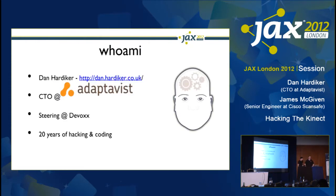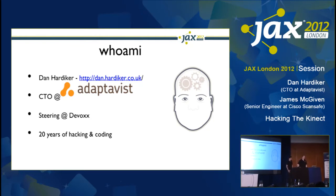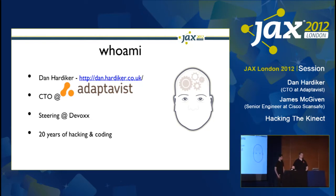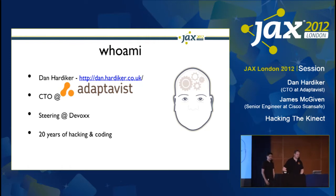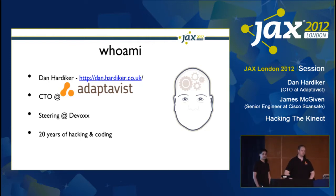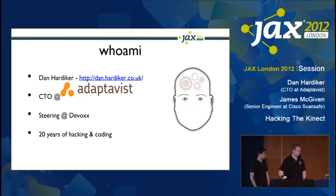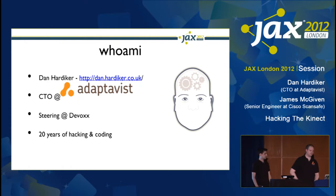Dan's going to introduce himself. I'm Dan Hardiker, CTO of Adaptivist. We deliver social software to large and small companies, focusing exclusively on driving the technology and process of application development and management, primarily using the Atlassian stack. I've been on the steering committee for DevOps for the last five years and have been hacking and coding for as long as I can remember.